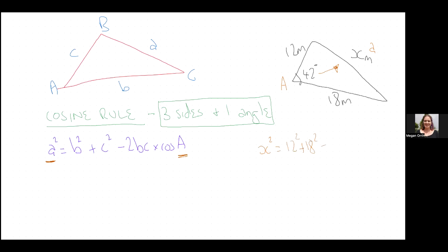So x² equals the other two ones squared—it doesn't matter which one is which—minus 2 times both of them times cosine 42. And you just type that straight into a calculator. 12² plus 18² minus 2 times 12 times 18 times cosine of 42.